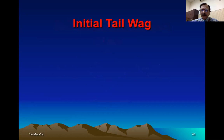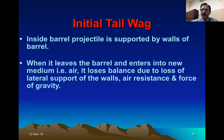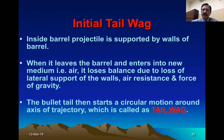The initial tail wag occurs because when the bullet travels within the barrel it is supported by the barrel walls. Upon leaving the barrel, the lateral support is lost, and air resistance and gravity act as negative factors. Due to loss of lateral support, air resistance, and gravity, the bullet becomes unstable — this instability after exiting the barrel is known as the initial tail wag.